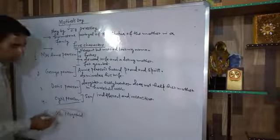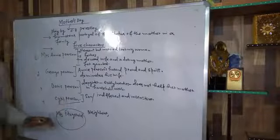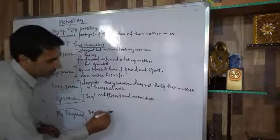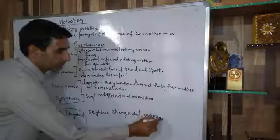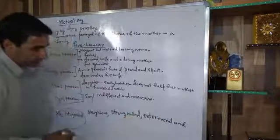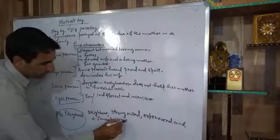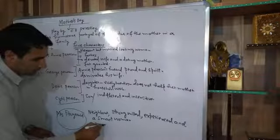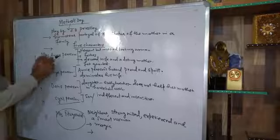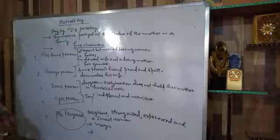Mrs. Fitzgerald is Mrs. Annie Pearson's neighbor. She is quite strong-willed, experienced, and a smart woman. She knows magic which she has learned from the East. She helps Mrs. Annie Pearson to reform the spoiled members of Mrs. Annie Pearson's family.